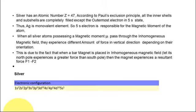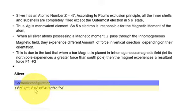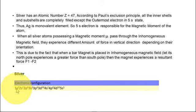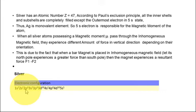The electronic configuration of silver atoms is: 1s², 2s², 2p⁶, 3s², 3p⁶, 3d¹⁰, 4s², 4p⁶, 4d¹⁰, and 5s¹. All orbitals up to 4d¹⁰ are completely filled — 1s², 2s², 2p⁶, and similarly up to 4d¹⁰ are all completely filled orbitals. The outermost 5s¹ electron is not completely filled.